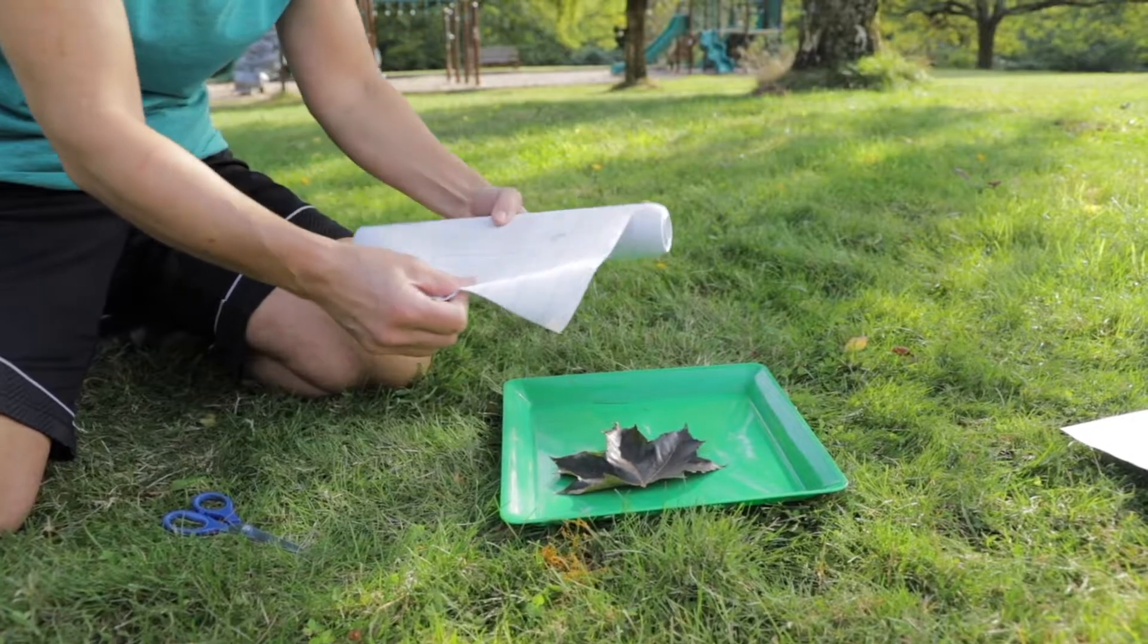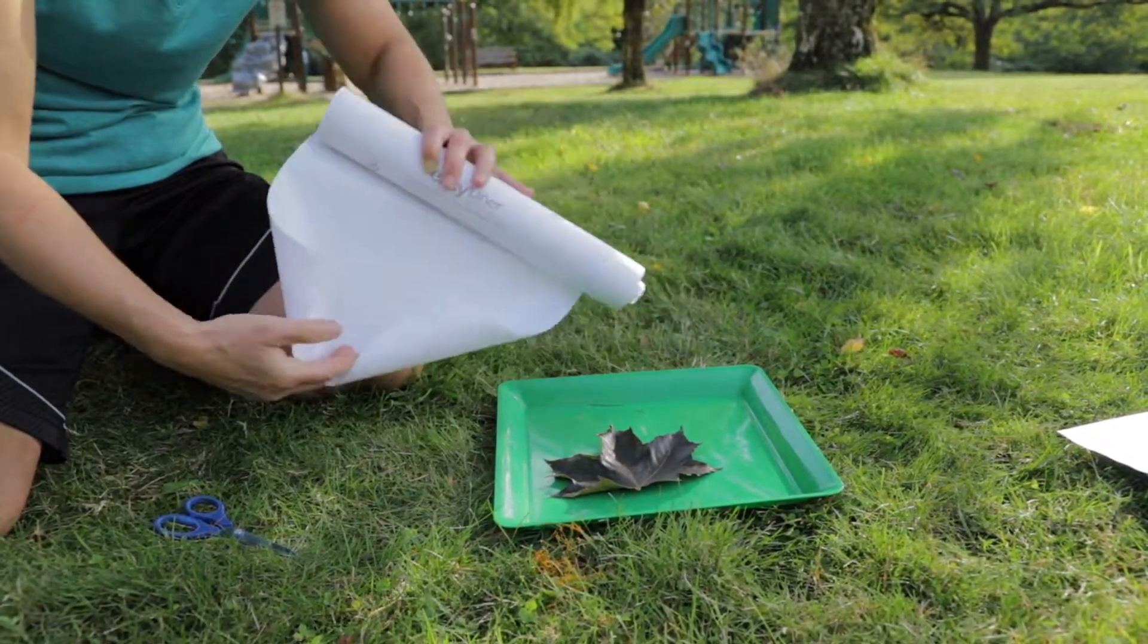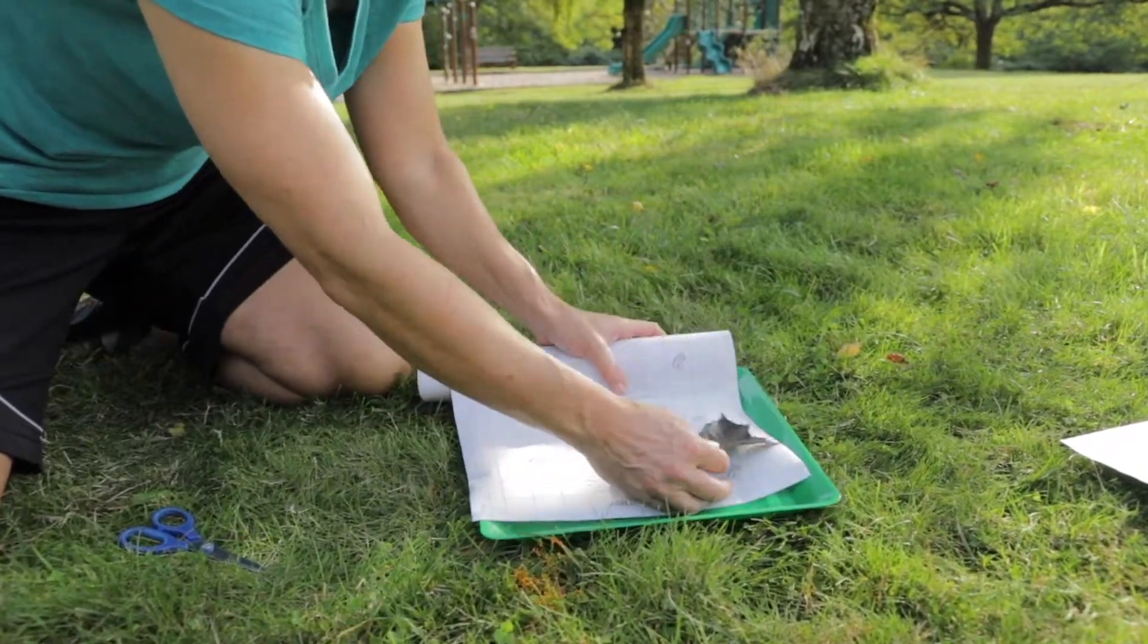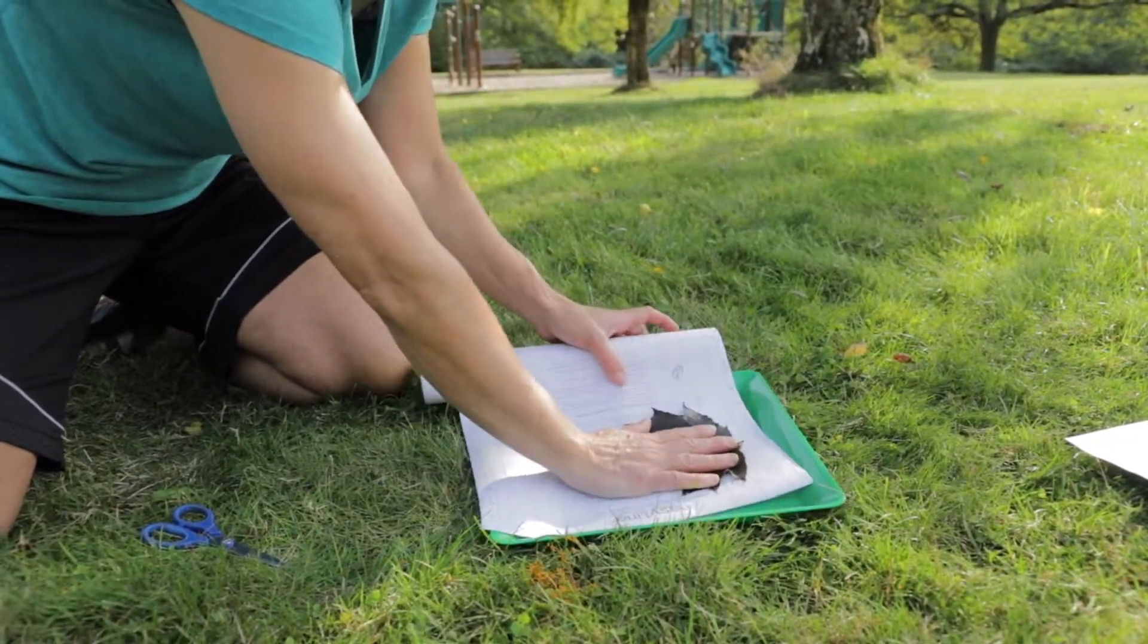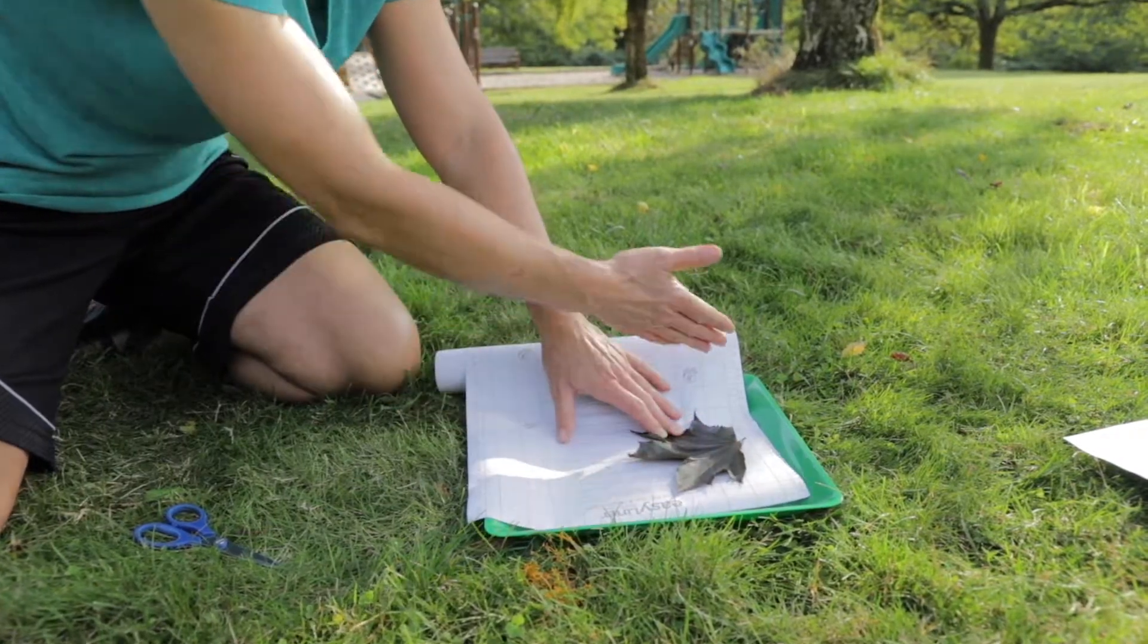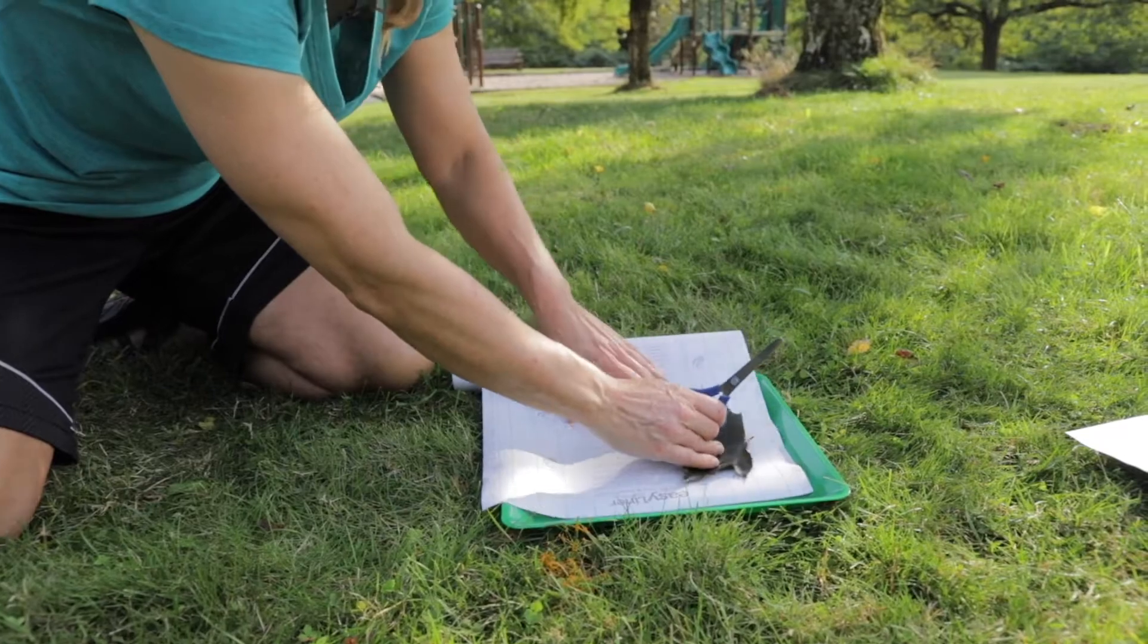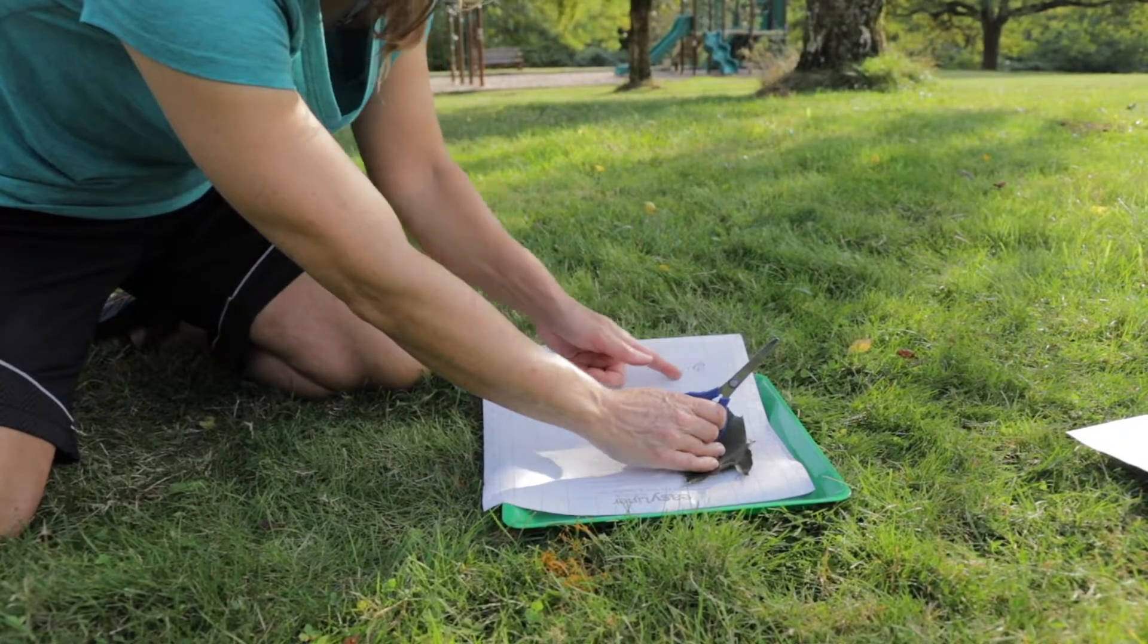Once it's flat and smooth you can get clear contact paper from the store and we can cover it with contact paper. So I'm measuring to make sure that I'm wider than the leaf and that I have enough to fold over in half. I'm going to cut it just to give myself enough room right here.